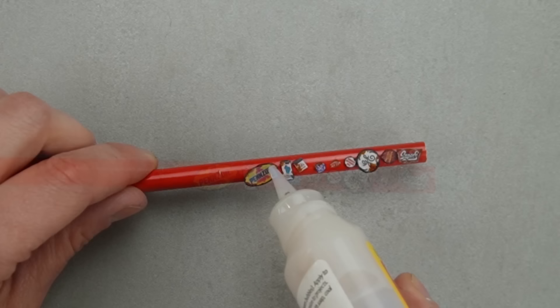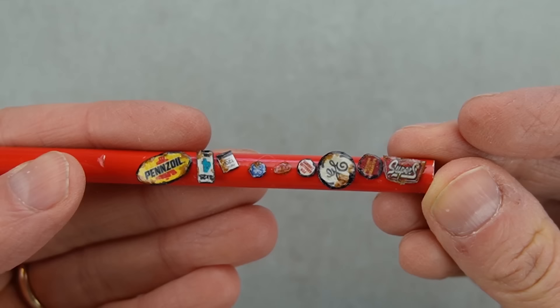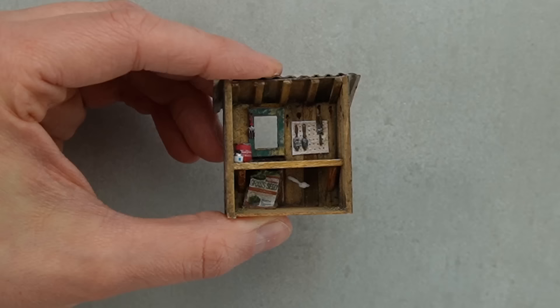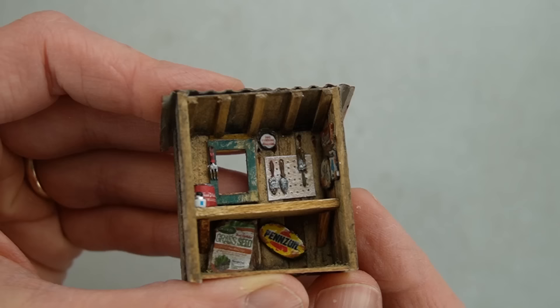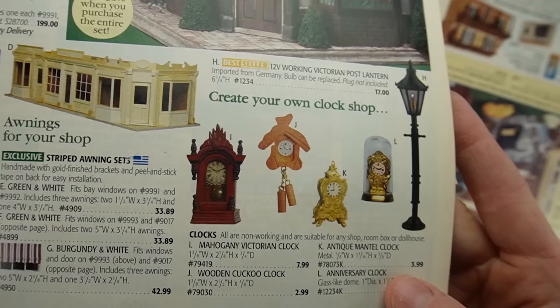I'm protecting each of the pieces with a product called Dimensional Magic, which is a lot like UV resin and Diamond Glaze. It dries to a nice shiny finish. Under the table is the only place the biggest sign will fit. I'm hovering it above the floor so it'll still be visible when I add more details in front of it. I'm using a button and a graphic from a Hobby Builder Supply magazine to make a miniature clock.